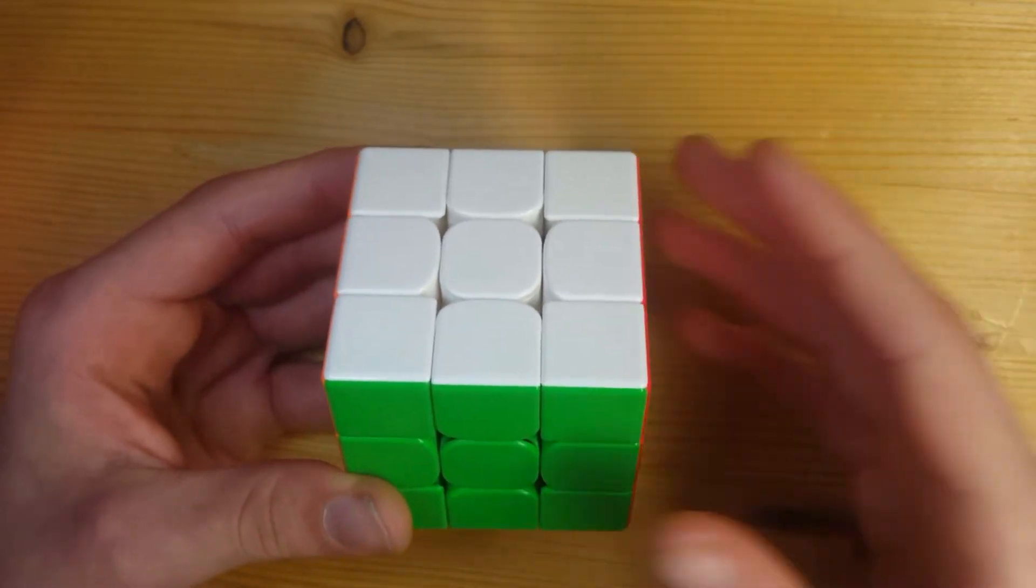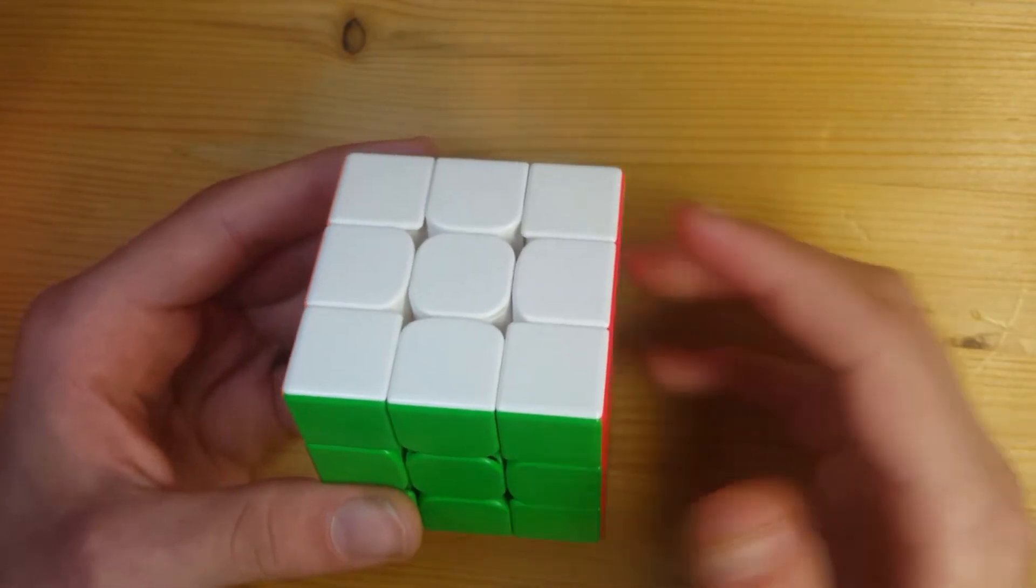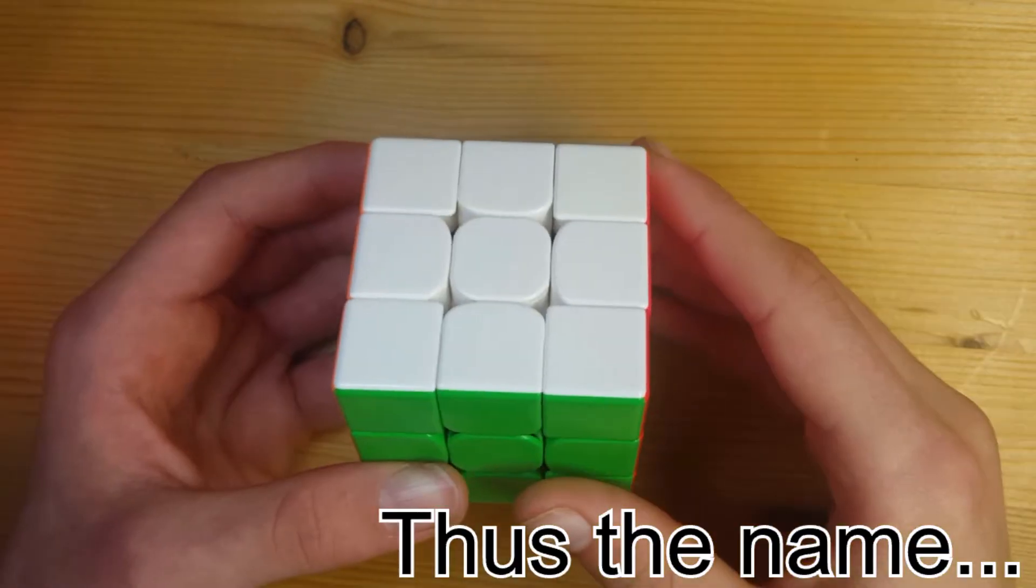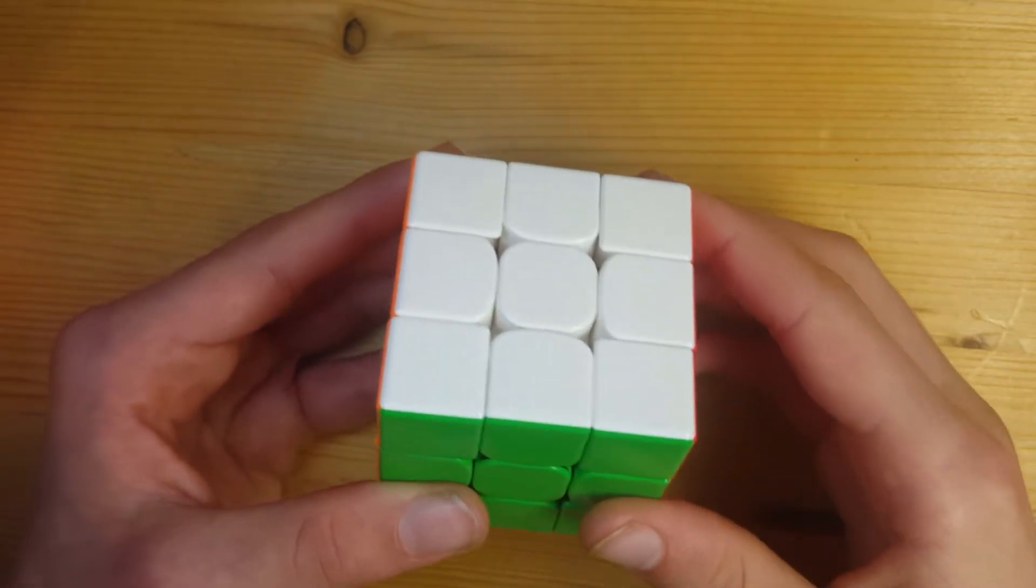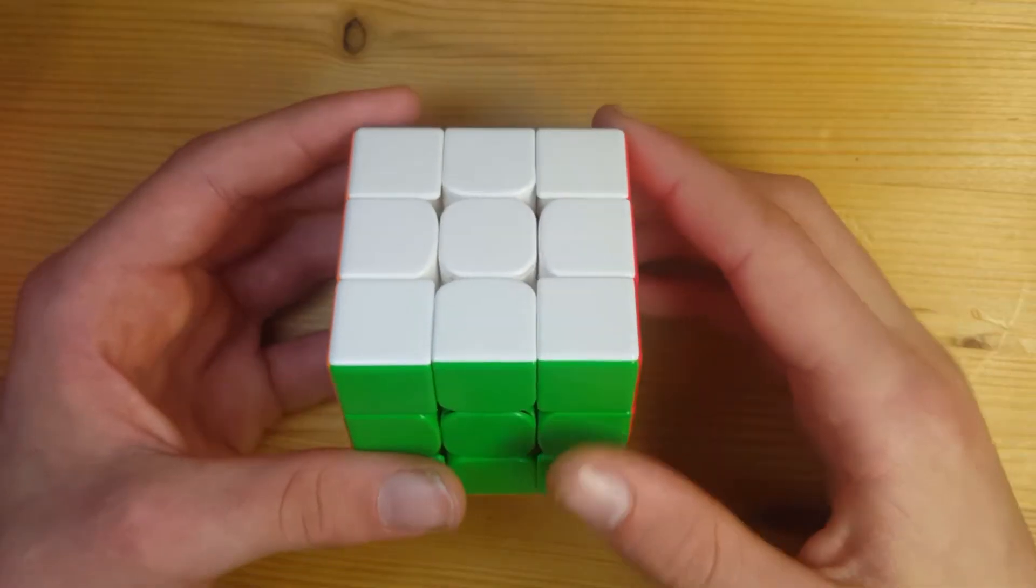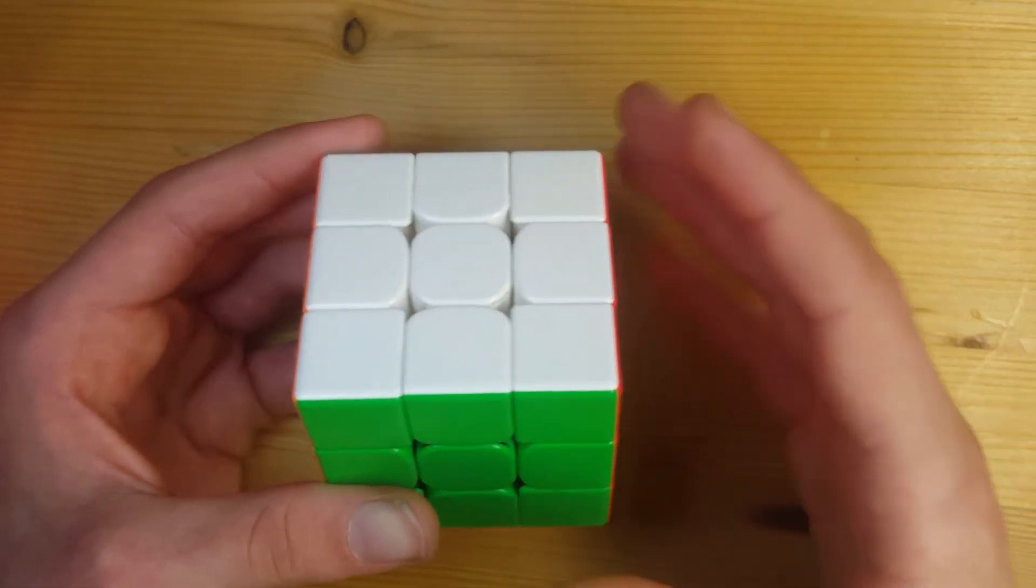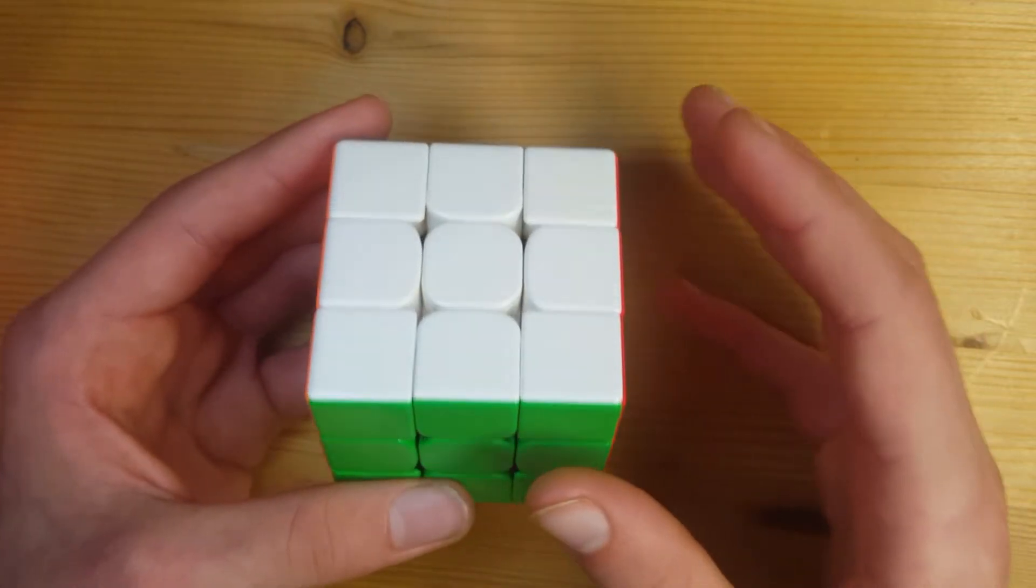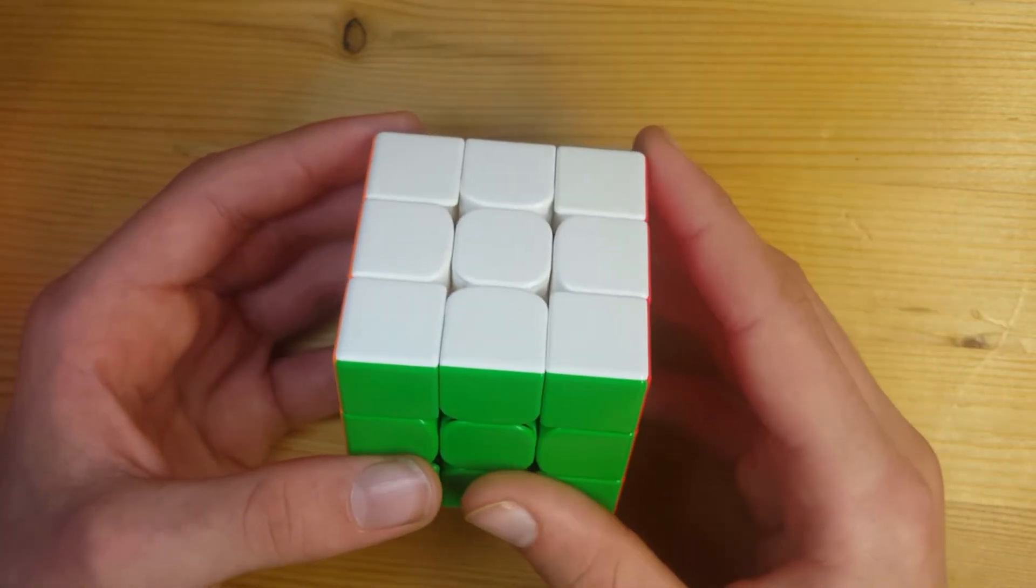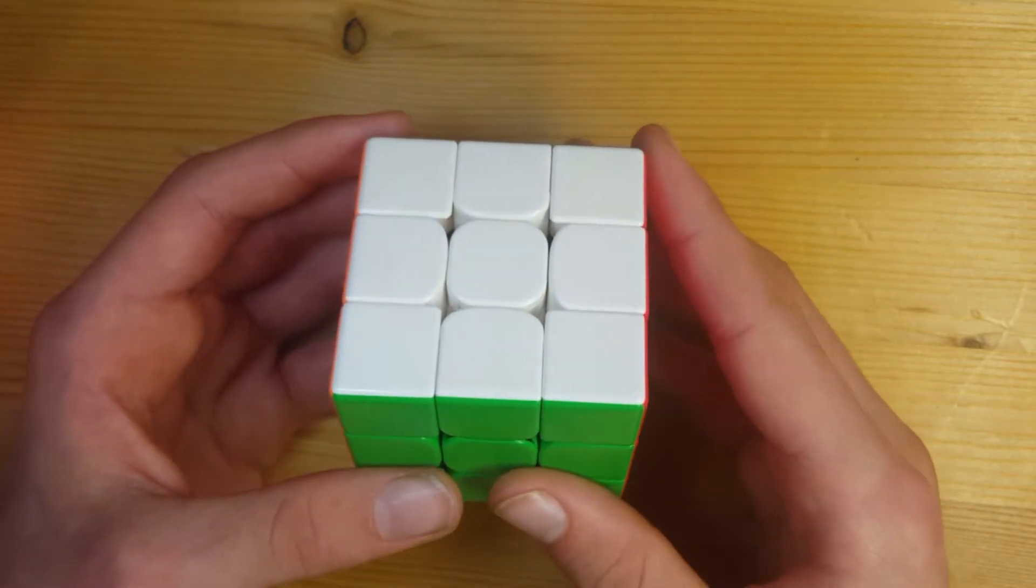The thing about 2-look OLL though is that you're only gonna have to do a maximum of two algorithms to solve all of OLL, but in beginner OLL you may even have to do an algorithm up to five times. If you're planning on trying to solve the Rubik's Cube as fast as possible, I would highly recommend learning 2-look OLL and I'm gonna be going over each of the algorithms here and try to make them as easy as possible for you to learn.